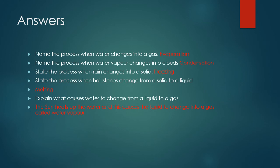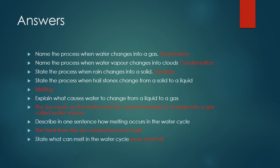Without the sun, the water cycle would not be possible. Melting is changing a solid into a liquid when a solid is gaining heat. The heat from the sun causes the ice to melt — the ice is a solid and it changes into a liquid in the sun. Snow can melt and hail can melt; they are solids that can melt and change into liquids.